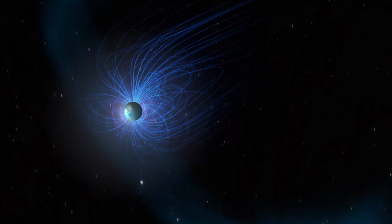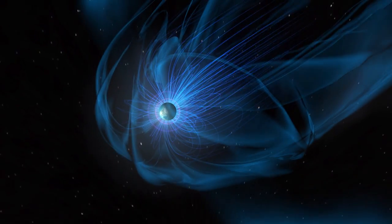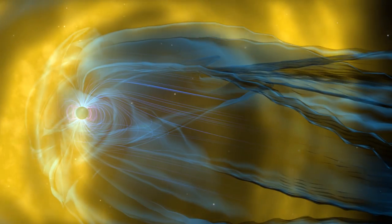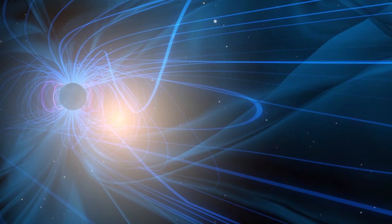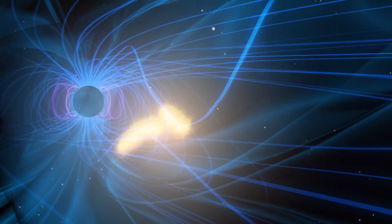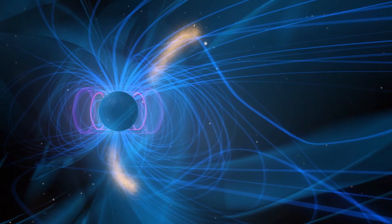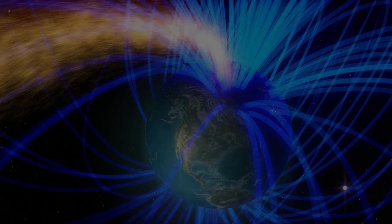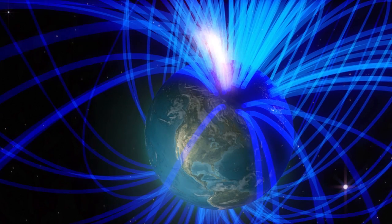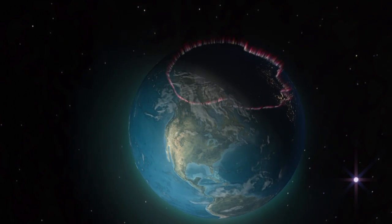The Earth's magnetic field captures some of the Sun's charged particles, which collide and excite atoms and molecules in the upper atmosphere. As these particles travel down the magnetic field lines at the poles, they relax, releasing a colorful glow known as the aurora or the northern and southern lights.